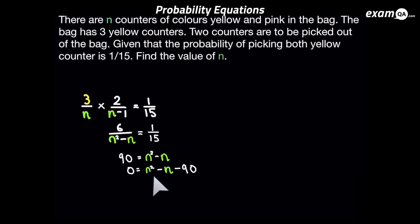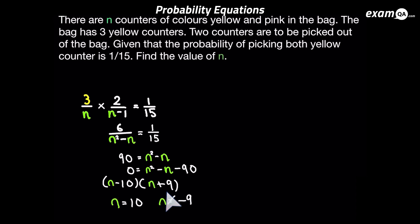You should be able to factorize this — it's nice and easy. If you've got problems with factorizing, definitely go back and watch the video on factorizing quadratics. So we factorize it to get n minus 10 and n plus 9. From that we can say n equals 10 or n equals minus 9. Of course we can ignore n equals minus 9, because n is the amount of counters in the bag and there cannot be a negative amount of counters. So we know n is 10.